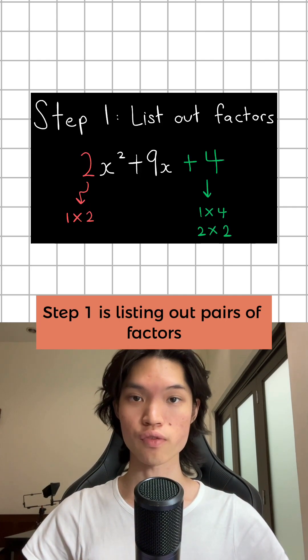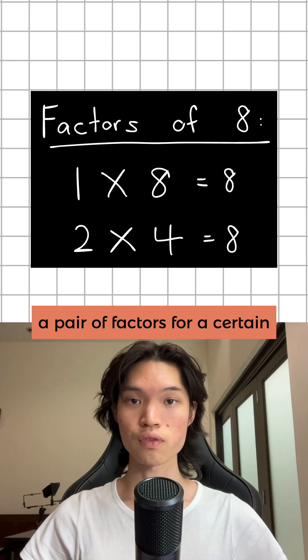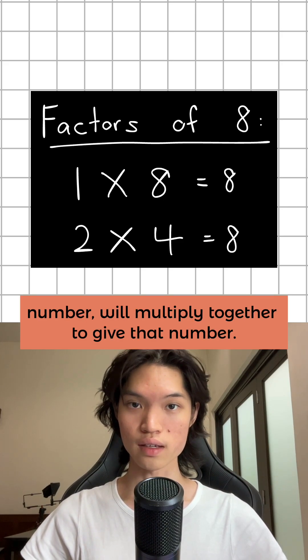Step 1 is listing out pairs of factors for the numbers a and c. A pair of factors for a certain number will multiply together to give that number.